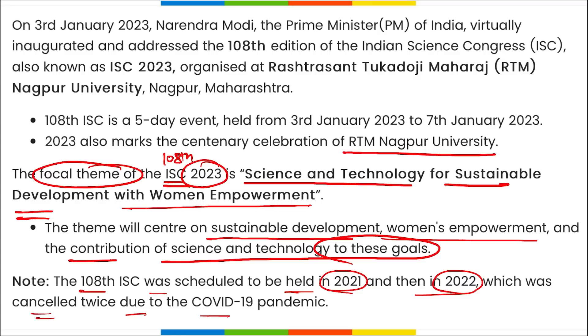एक चीज़ और — first session of Indian Science Congress कब हुआ था? यह 15 से 17 January के बीच में 1914 में हुआ था।